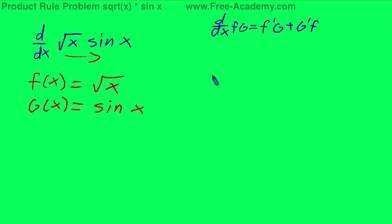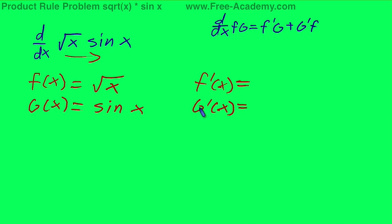Now we need to find our different derivatives independently. And once we do that, we can just plug everything into our product rule formula. g prime of x is really easy because the derivative of sine is cosine.